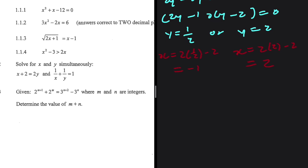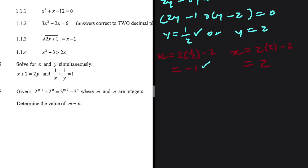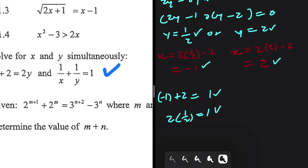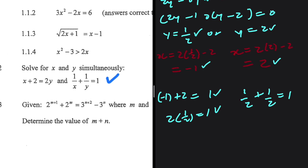Let's verify those values. When y equals 1/2 and x equals negative 1, we have negative 1 plus 2 equals 1, and 2 times 1/2 also equals 1, so the first equation is satisfied. For y equals 2 and x equals 2 in the second equation, 1/2 plus 1/2 equals 1, which checks out.